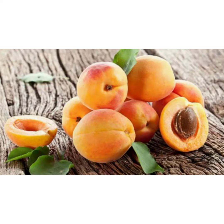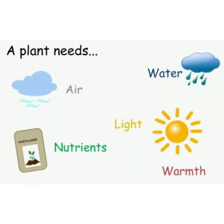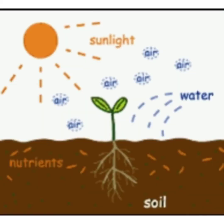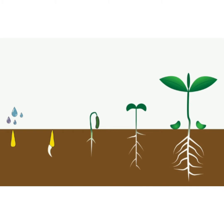Seeds are present inside the fruits. Most plants reproduce by their seeds. When the seed gets the right amount of air, water and warmth, it starts growing into a small plant called the seedling. This process is called germination — the process of seeds developing into a new plant.